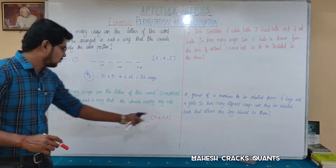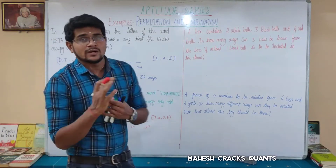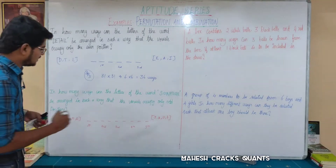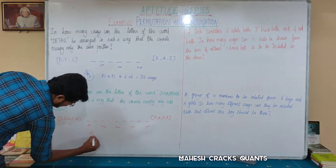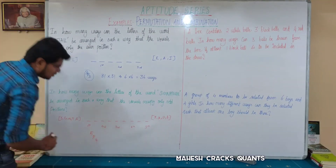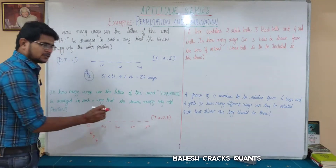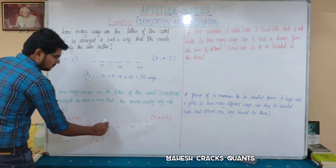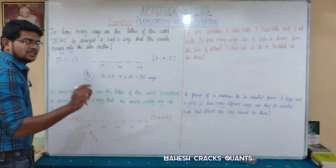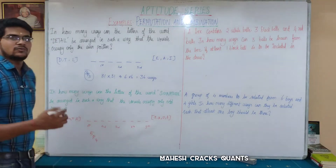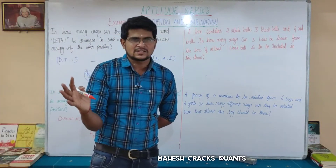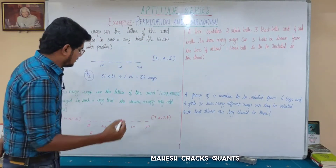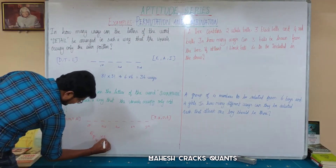Only vowels will be placed in the odd positions. In 5 odd positions, we place 4 vowels, leaving 1 odd position empty. The remaining consonants G, N, T, R and one remaining odd slot give us 5 letters for 5 spaces (even positions plus leftover odd), arranged in 5 factorial ways.